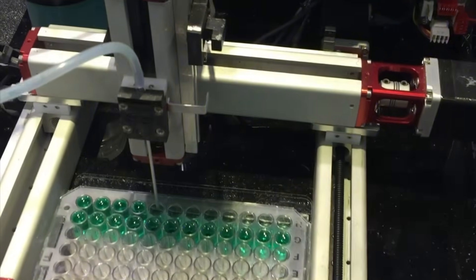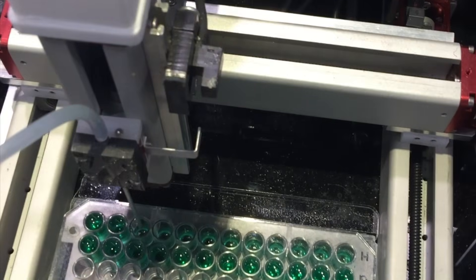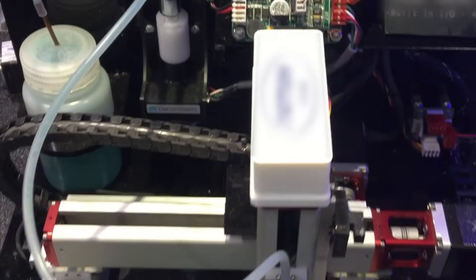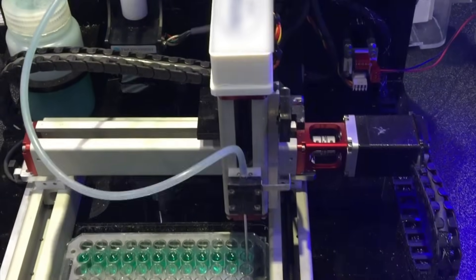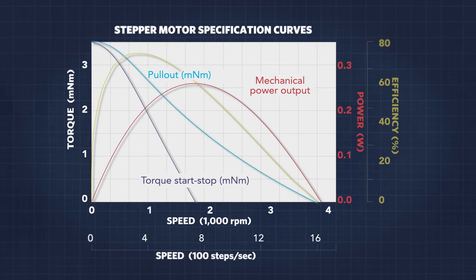Stepper motors are generally sized according to torque curves, which are typically specified by the manufacturer. A stepper motor's low-speed torque varies directly with current. How quickly the torque falls off at higher speeds depends on several factors, such as the winding inductance and drive circuitry, including the drive voltage.